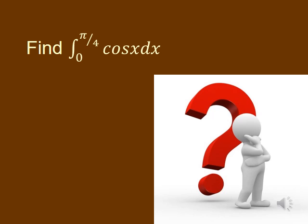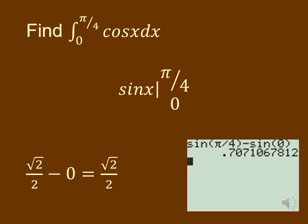Now we're going to look at another problem. We want to find the definite integral from 0 to pi over 4 of cosine x dx. Whenever you see the question marks, you might want to pause the video before you go on. The antiderivative of cosine is just sine, and we need to evaluate sine at pi over 4 and 0. The sine of pi over 4 is square root of 2 over 2. The sine of 0 is 0, so the answer is square root of 2 over 2. You could also just type that into a calculator — sine of pi over 4 minus sine of 0 — and assuming your calculator is set in radians, you get about 0.707, which is the square root of 2 over 2.